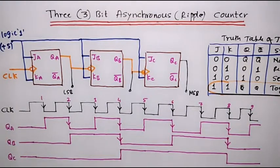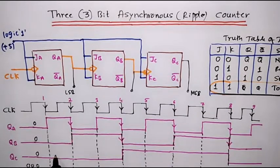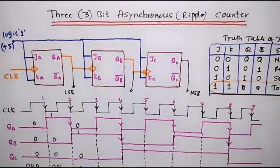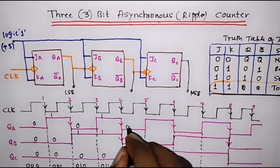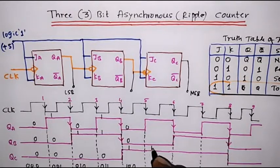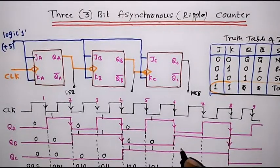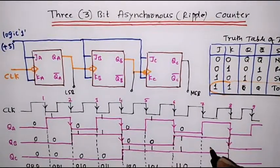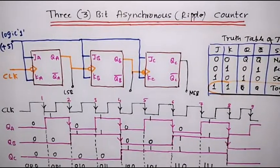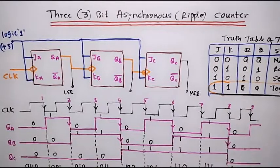Initially the output is QC=0, QB=0, QA=0. After the first clock pulse: 0, 0, 1. After the second: 0, 0, 1 — then 0, 1, 0. At the third: 0, 1, 1. At the fourth: 1, 0, 0. At the fifth: 1, 0, 1. At the sixth: 1, 1, 0. At the seventh: 1, 1, 1. After that, all values go back to 0, 0, 0.